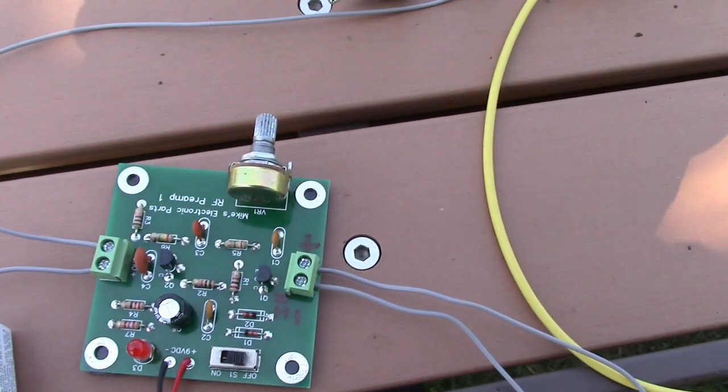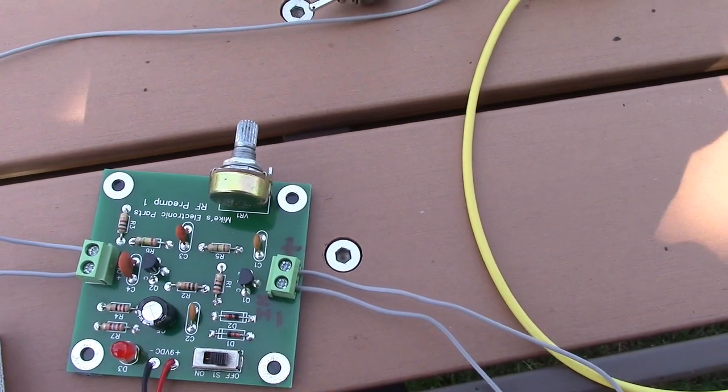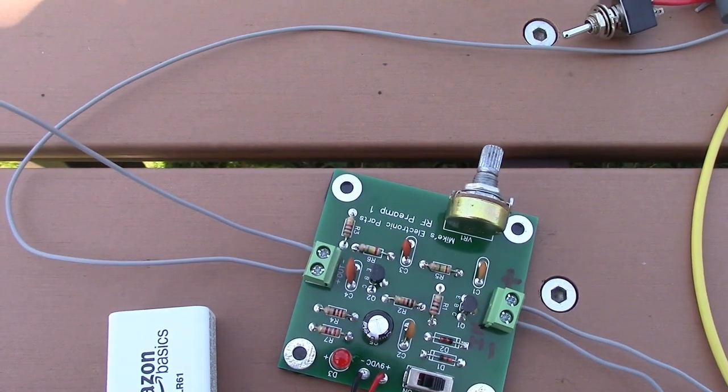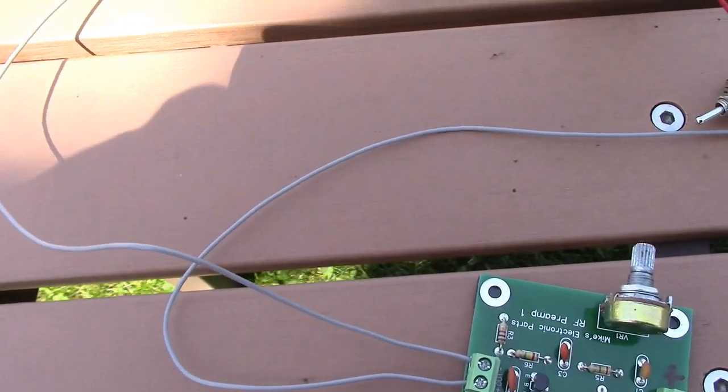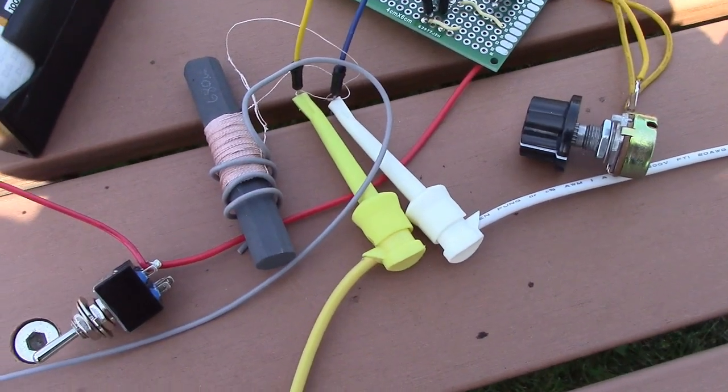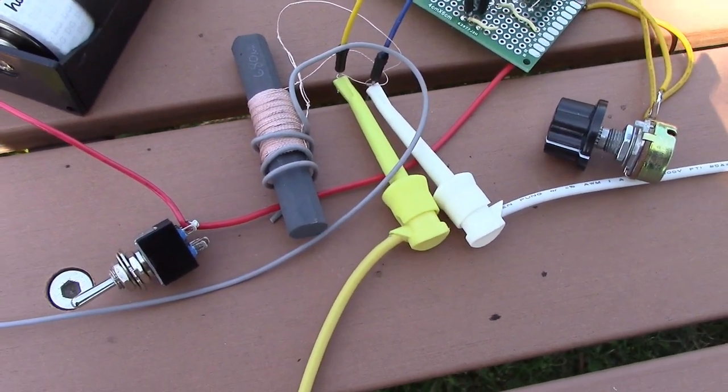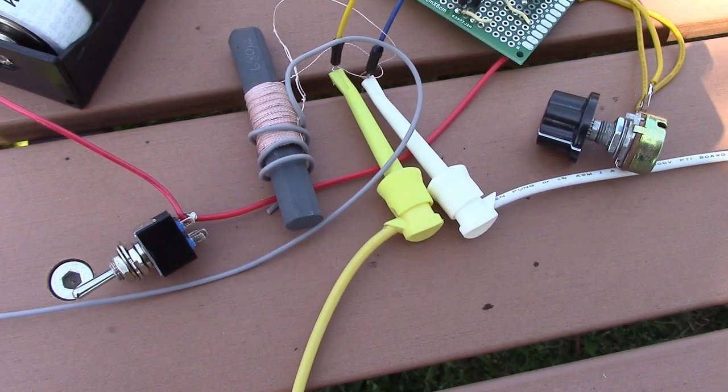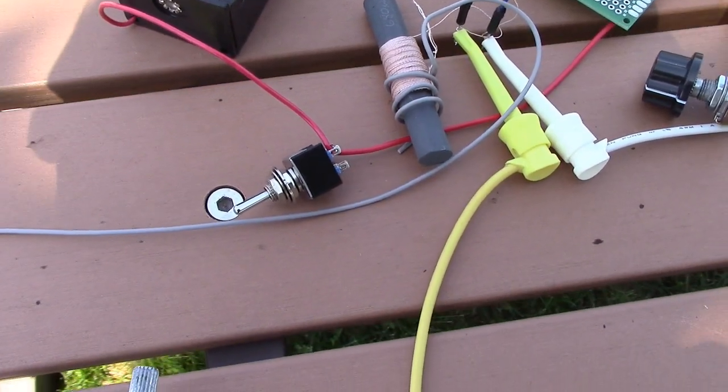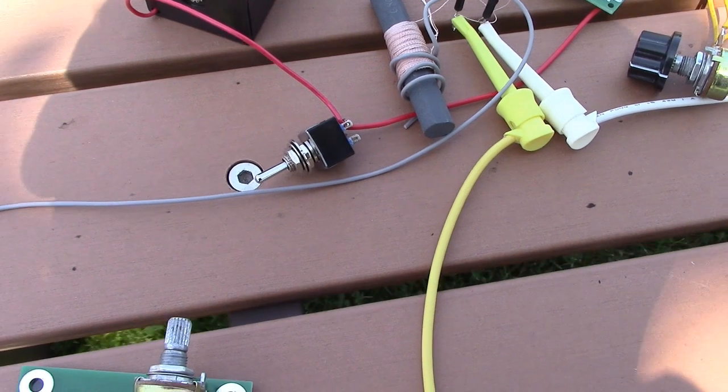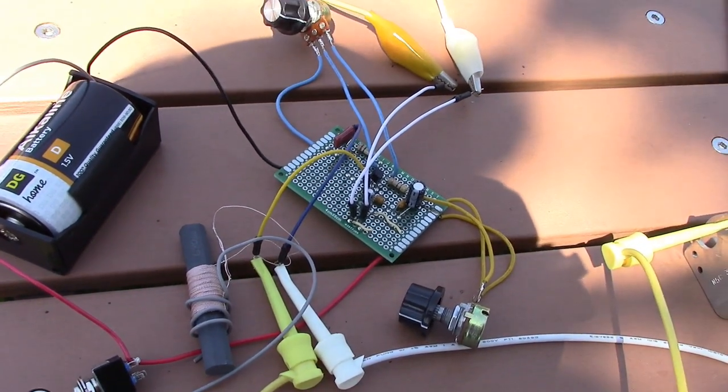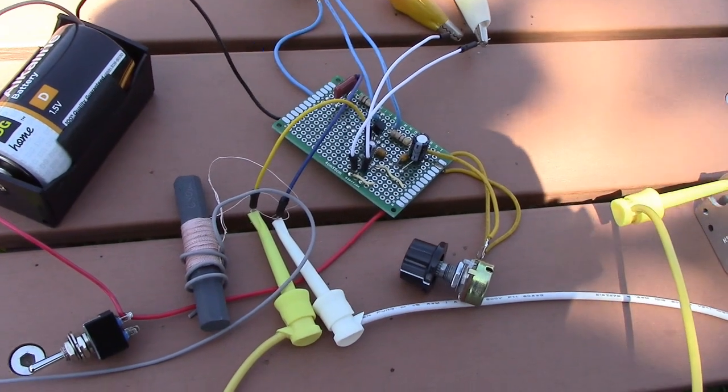I've got the gain turned up about maybe a quarter of the way, and I've just got it connected to the output here going over to the ferrite bar antenna where I've just got it inductively coupled to that which is connected to the radio circuit. The other end just goes to that wire in the tree and to the ground.